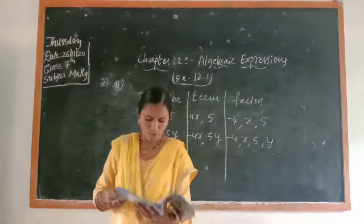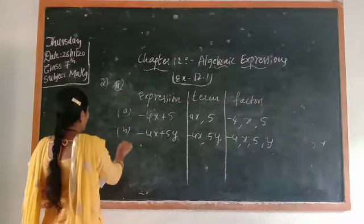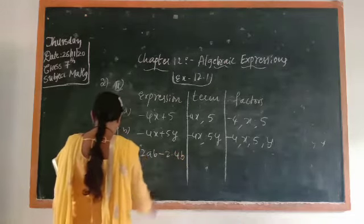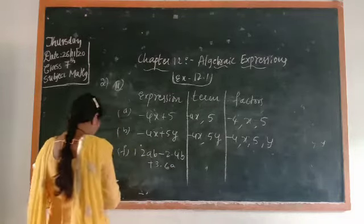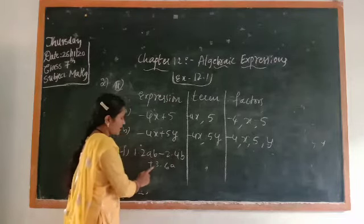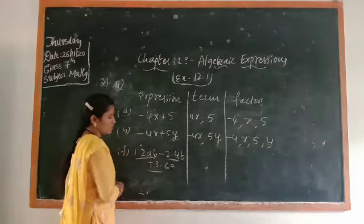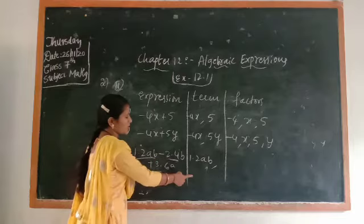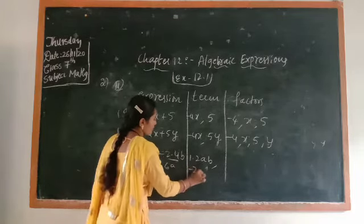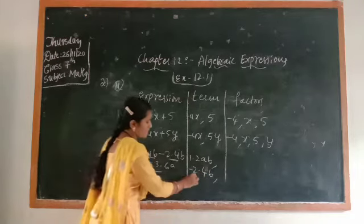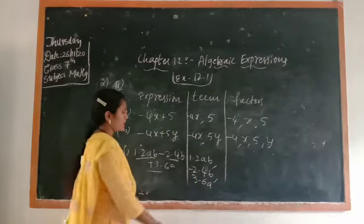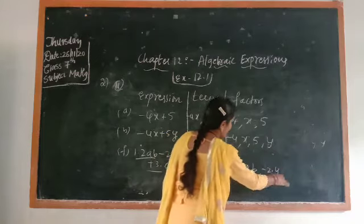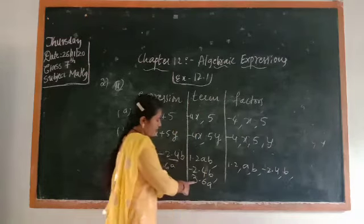Now take the expression in decimal form: 1.2ab − 2.4b + 3.6a. There are three terms: 1.2ab, −2.4b, and 3.6a. Whenever a minus sign appears it comes with the term. The factors for 1.2ab are: 1.2, a, b. The factors for −2.4b are: −2.4, b. The factors for 3.6a are: 3.6, a.